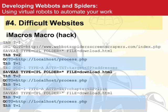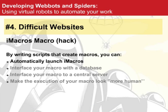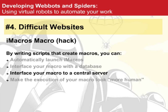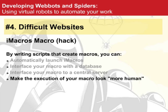You can extend this hack further by writing scripts that automatically launch iMacros, interface it to a database, and dynamically generate macros. A script maintains a basic macro template, hits the database, grabs the information it's looking for, inserts that into the macro, and launches it. You can also insert random delays of various types to make things look more human-like — all useful and undocumented in the iMacros documentation.